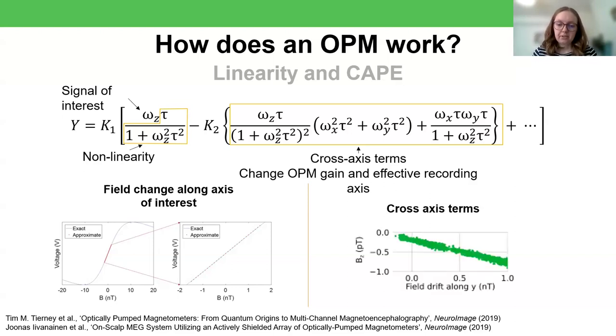And so if you plot that out, okay, bz is on the y-axis of this figure, and bz is constant. But if I'm changing the field along the sensor's y-axis, confusingly on the x-axis of this graph, then you're still seeing a change in bz even though it hasn't actually changed.